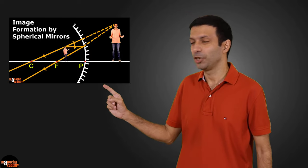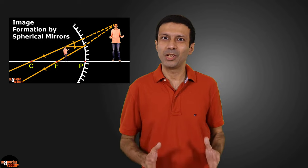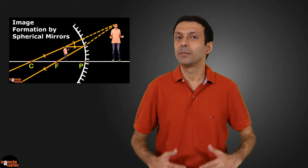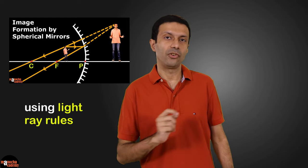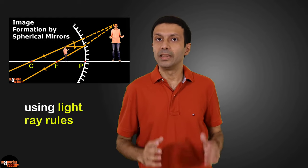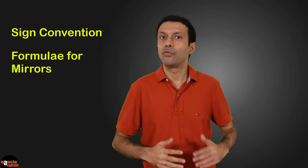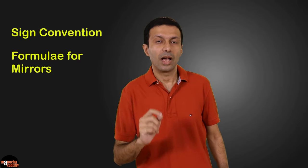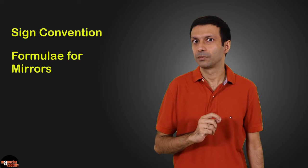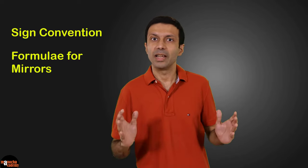If you haven't watched that video, do check it out. In the video, I am the object and we try to find the position and nature of the image using the light ray rules. In this video, we are going to learn a completely different approach. We are going to look at sign convention and some formulae for mirrors that will help us predict the nature and position of the image. We will see how to apply these formulae by looking at some examples.